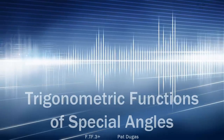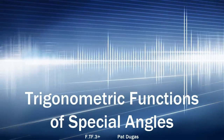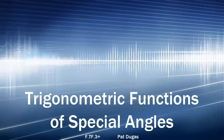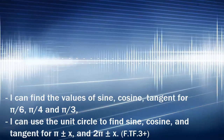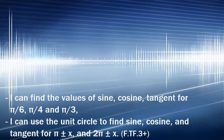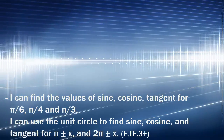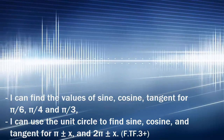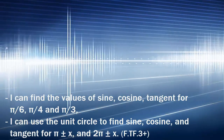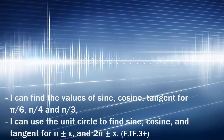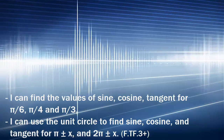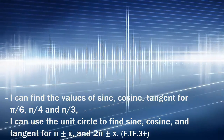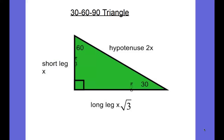We're going to use geometry to find trigonometric functions at special angles between 0 and pi over 2. You'll be able to find the values of sine, cosine, and tangent geometrically for pi over 6, pi over 4, and pi over 3, and use the unit circle to explore and find the values of the trigonometric functions beyond their original periods.